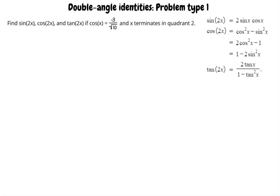Find sine of 2x, cosine of 2x, and tangent of 2x if cosine of x equals negative 3 over square root of 10, and x terminates in quadrant 2.